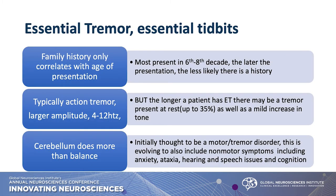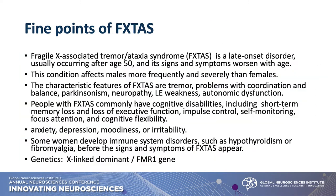For essential tremor tidbits: family history is always considered, but really family history only correlates with age of presentation — if it happens later in life, family history is less likely. Typically it's an action tremor, but if patients have long-standing essential tremor, there can be a rest component and even some cogwheeling, which is where the picture gets muddy and a DAT scan might be helpful. And remember, the cerebellum does more than just balance — cognitive issues, ataxic pictures, hearing and speech issues like scanning speech can be seen in people with long-standing essential tremor.